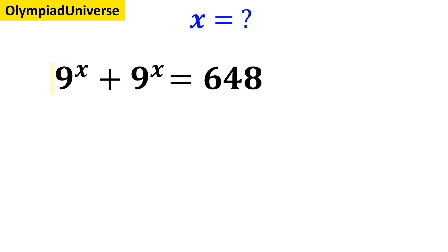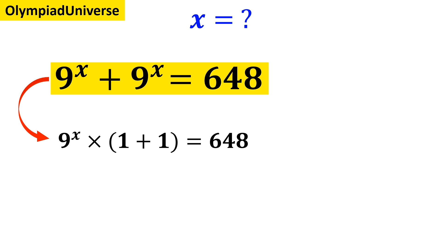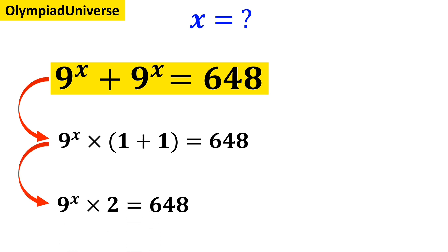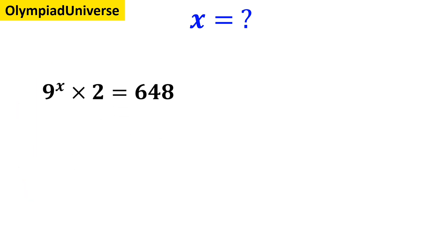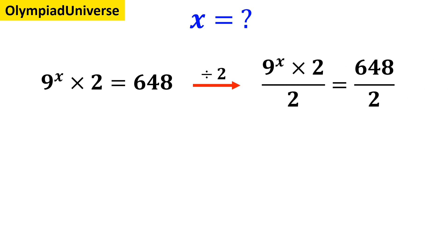First, we write this equation as follows: 9 to the power of x times 1 plus 1 equals 648, which simplifies to 9 to the power of x times 2 equals 648. Now we divide both sides of the equation by 2, so we get 9 to the power of x times 2 over 2 equals 648 over 2, and it simplifies to 9 to the power of x is equal to 324.